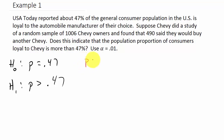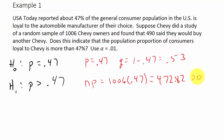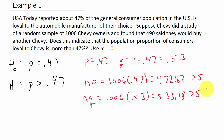P equals 0.47, Q equals 1 minus 0.47, which is 0.53. N times P is 1,006 times 0.47, which equals 472.82 — that's greater than 5. N times Q is 1,006 times 0.53, which equals 533.18 — also greater than 5. So both conditions are satisfied.